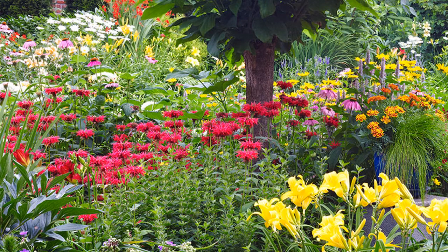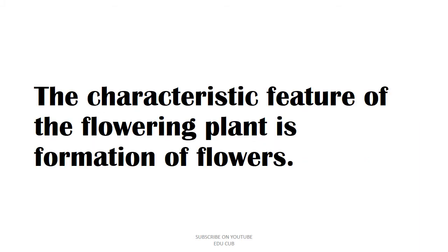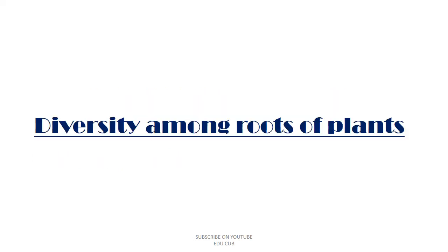Hi children, today we are with the new lesson from Plant Diversity, third part, Grade 7. Today's topic is the diversity of the parts of flowering plants. The characteristics of the flowering plant include the formation of flowers, and almost all parts such as stem, leaves, root, bud, flowers, and fruits can be seen in most plants. Plants show a great diversity, and now we are going to discuss diversity among roots of plants.